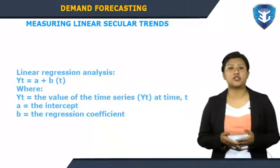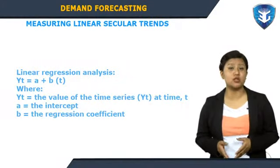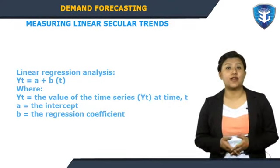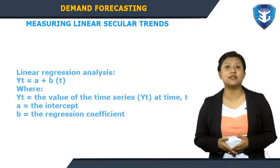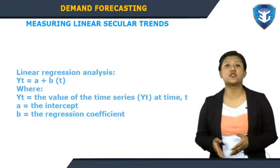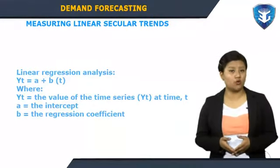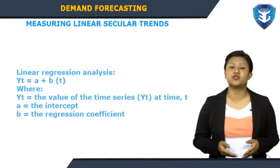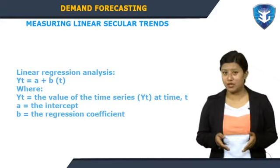Linear regression analysis fits time series data to a straight line equation: y_t = a + b·t, where y_t is the value of the time series at time t, a is the intercept (the value of y_t when t = 0), and b is the regression coefficient. The method of least squares regression is normally used to determine the values of the intercept a and the regression coefficient b.